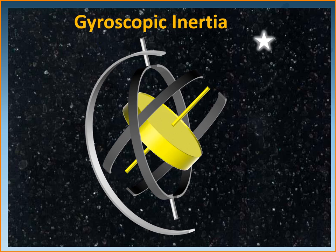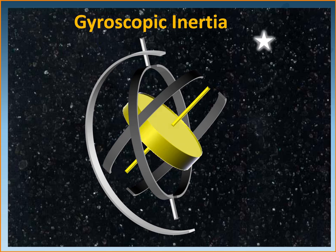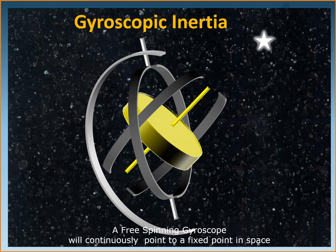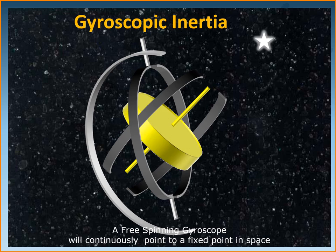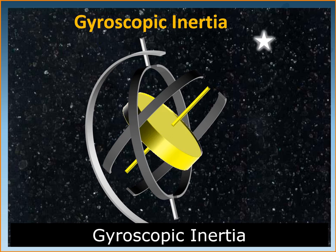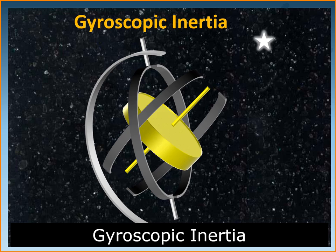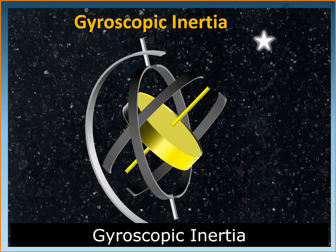Imagine the gyroscope gains its maximum RPM and is made to point towards a fixed star — a fixed direction in space. It shall continue to point towards that star as long as the RPM is maintained. However, it is not that simple. This will happen only if the earth was not spinning on its own axis. Because the earth is also spinning, and the gyroscope is situated on the earth, the movement of the earth has an impact on the movement of the gyroscope as well.